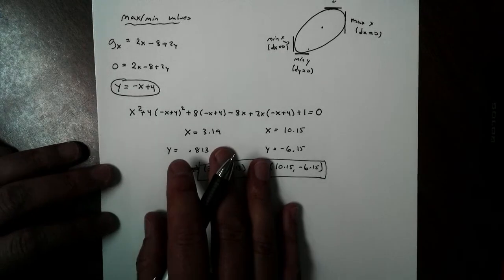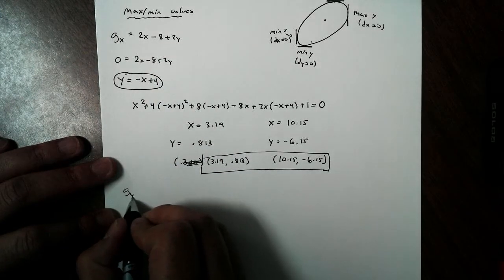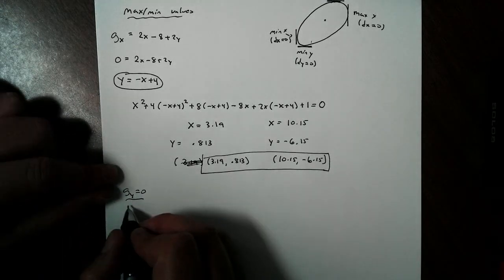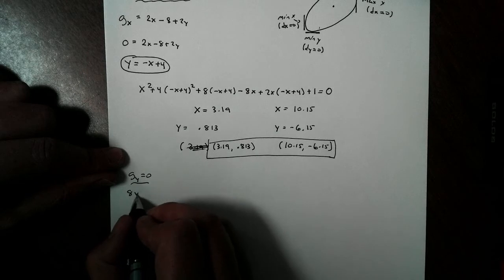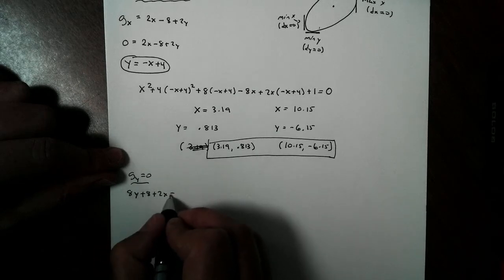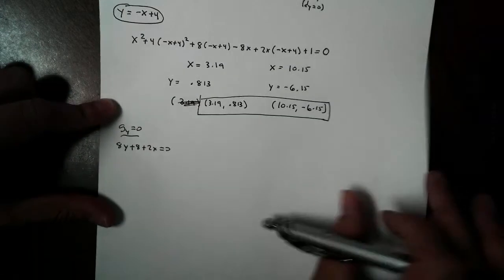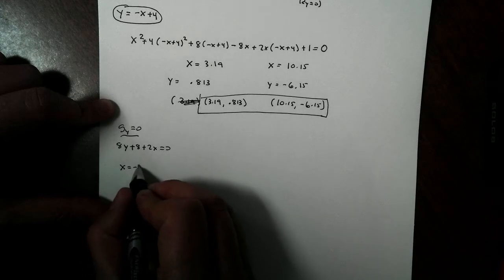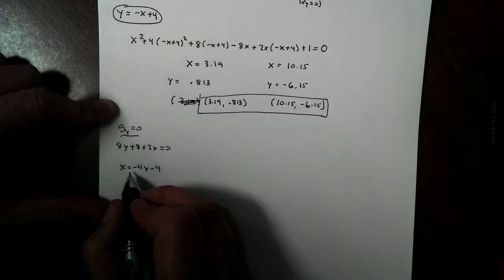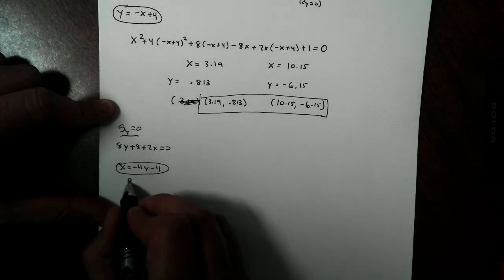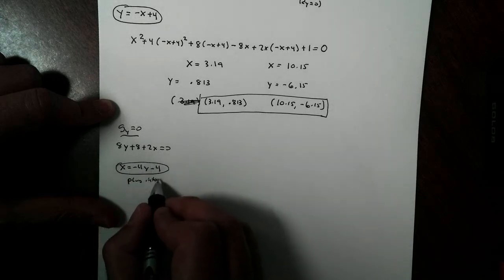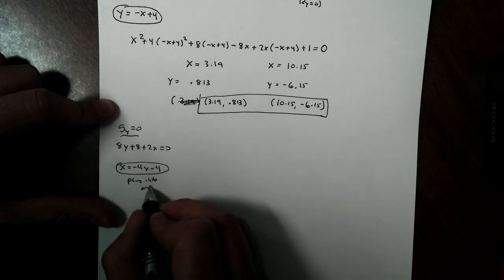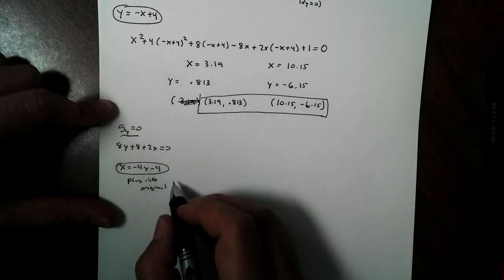Let's go ahead and now find the partial with respect to y equal to 0. My partial with respect to y was 8y plus 8 plus 2x equal to 0. I can solve for y here, but that's not going to be very nice. I'm going to solve for x instead. We get negative 4y minus 4. All I'm going to do with this is plug into the original function, into the original graph.